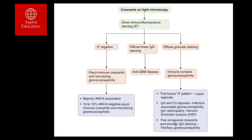There are three differential diagnoses based on the etiology of crescentic glomerular disease. First is vasculitis, which in the kidneys is called pauci-immune crescentic GN. Second is anti-GBM disease, also called Goodpasture syndrome. Third is immune complex glomerulonephritis, such as SLE and IgA nephropathy, which can also present like a crescentic GN. We can differentiate these based on pathology.